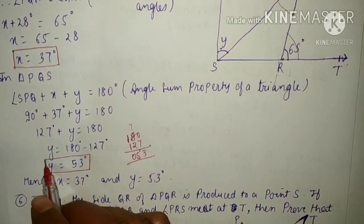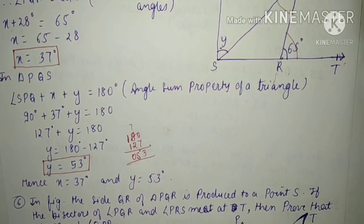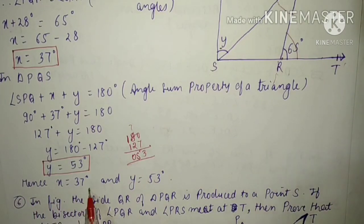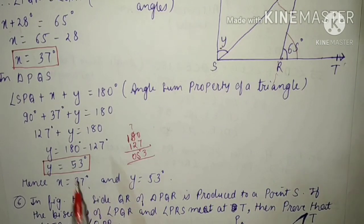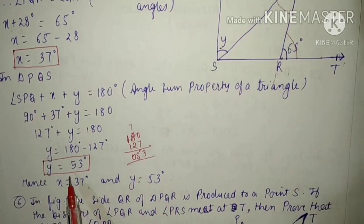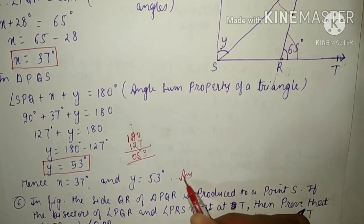This is the second part of our question. We got both values of X and Y. Hence X equals 37 degrees and Y equals 53 degrees. This is our answer.